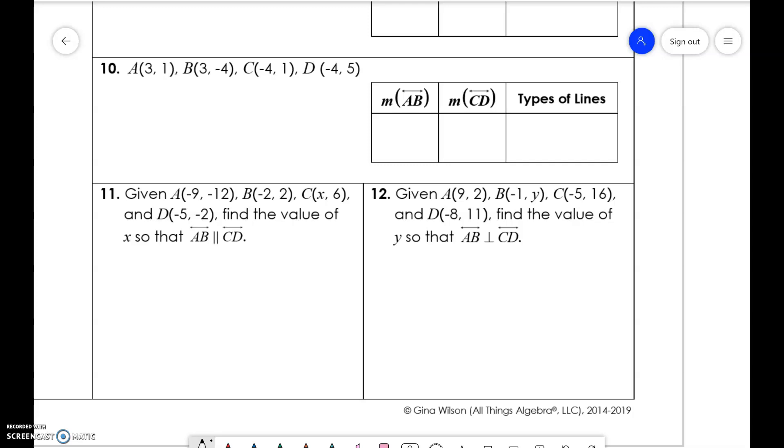Given AB and CD, find the value of x so that AB is parallel to CD. We know all the points for AB, but we're missing one value for x. So if we do 2 plus 12 over negative 2 plus 9, we get 14 over 7, which reduces to 2 over 1.